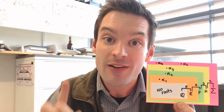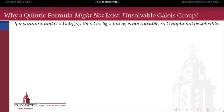It turns out there are a whole bunch of them, but we're going to show it very specifically for one polynomial in this video. So here's our burden of proof. We need to show that while it's true that S5 could be the Galois group of a fifth order polynomial, that in fact it is the Galois group of at least some fifth order polynomial.